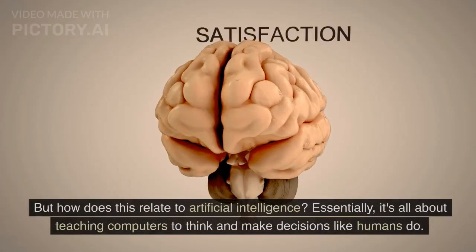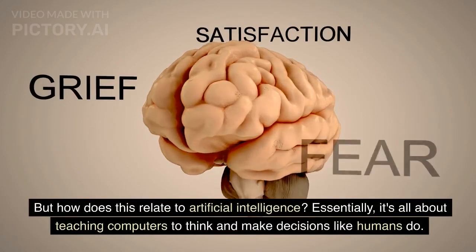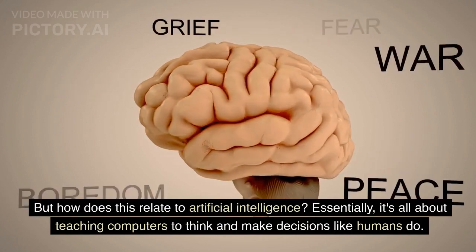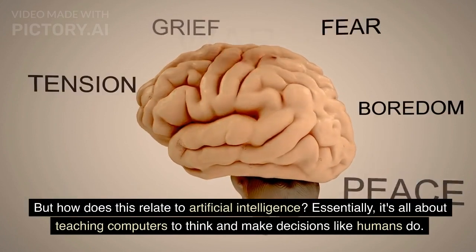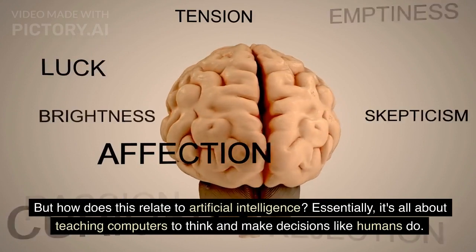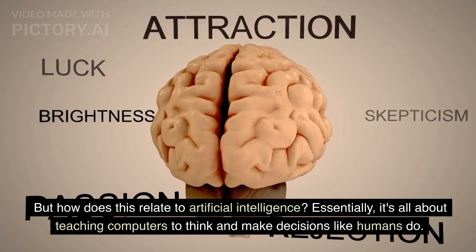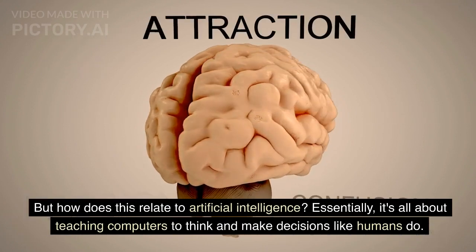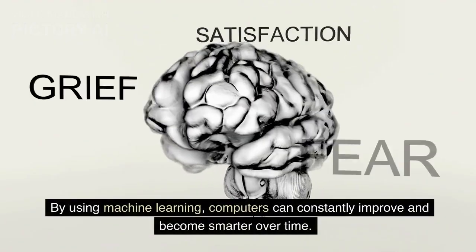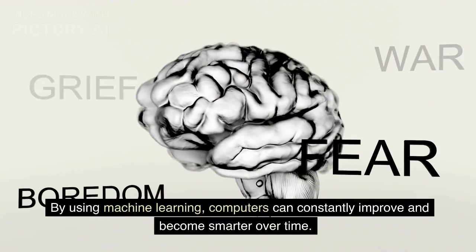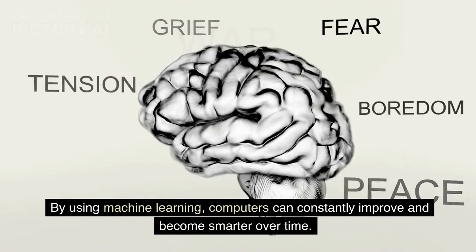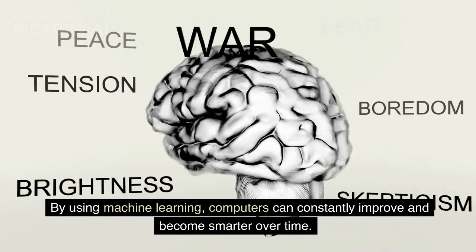But how does this relate to artificial intelligence? Essentially, it's all about teaching computers to think and make decisions like humans do. By using machine learning, computers can constantly improve and become smarter over time.